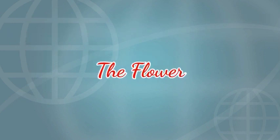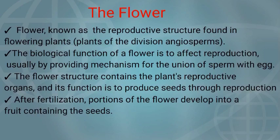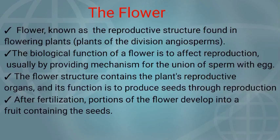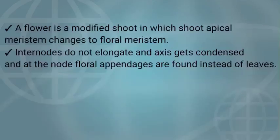The very first one is the flower. Flower is known as the reproductive structure found in flowering plants, particularly the division Angiospermia. The biological function of a flower is to affect reproduction, usually by providing a mechanism for the union of sperm with egg. The flower structure contains the plant's reproductive organs and its function is to produce seeds through reproduction. After fertilization, a portion of the flower develops into a fruit which contains seeds. A flower is a modified shoot in which the shoot apical meristem changes into floral meristem. Internodes do not elongate and the axis gets condensed, and at the nodes floral appendages are found instead of leaves.